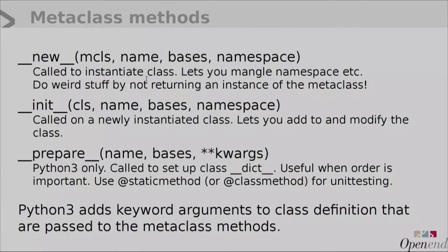The methods you will actually be using if you write your own metaclass are `__new__`, which is the constructor — it returns the object that you're instantiating. You don't actually have to return an instance of the class you're in; you can return whatever you want. If you return 42, instantiating the class will give you the integer 42 — try not to do that, it can be very confusing. `__init__` is called once you have your metaclass instantiated, that is, once you have your actual class object, and you can do stuff there.